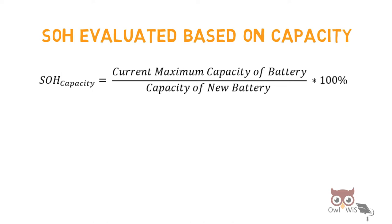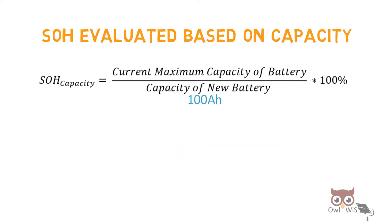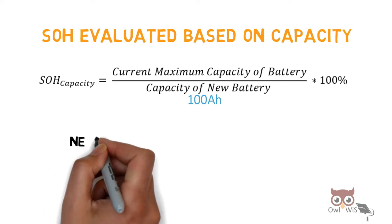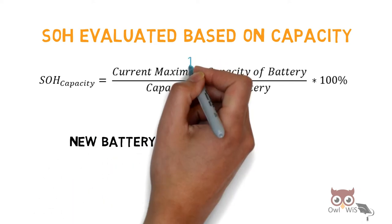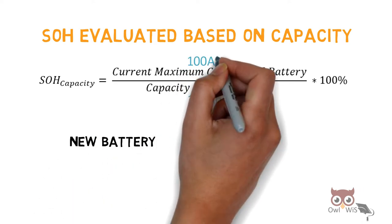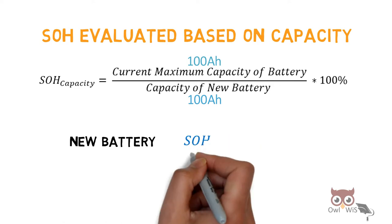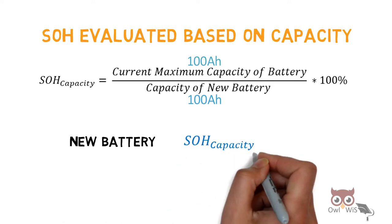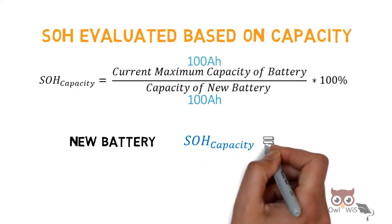For example, SOH evaluated based on capacity is the ratio of the current maximum capacity of the battery to the capacity of a new battery. If the capacity of a new battery is 100 ampere-hours and the current maximum capacity is also 100 ampere-hours, then the SOH capacity is 100%.